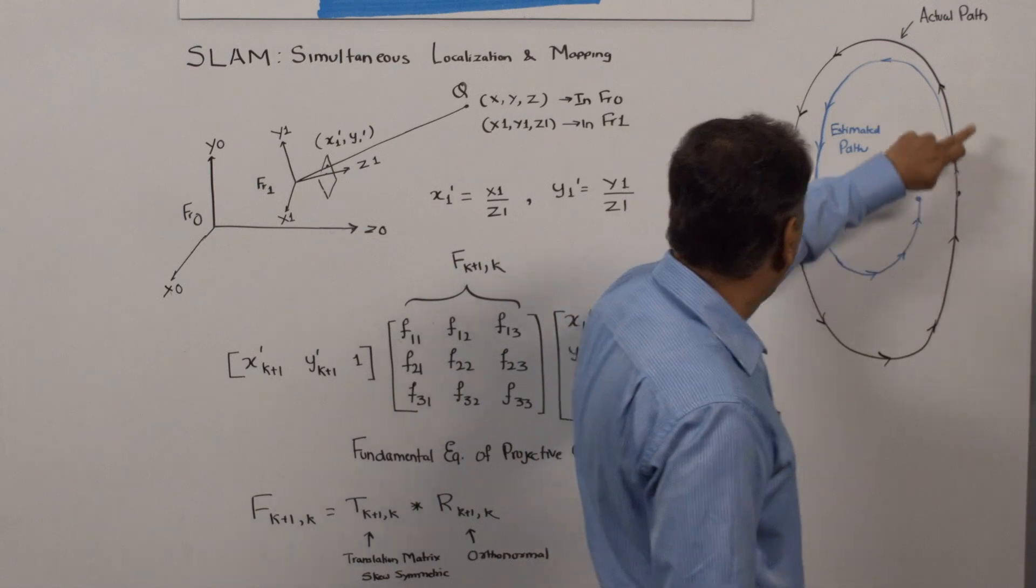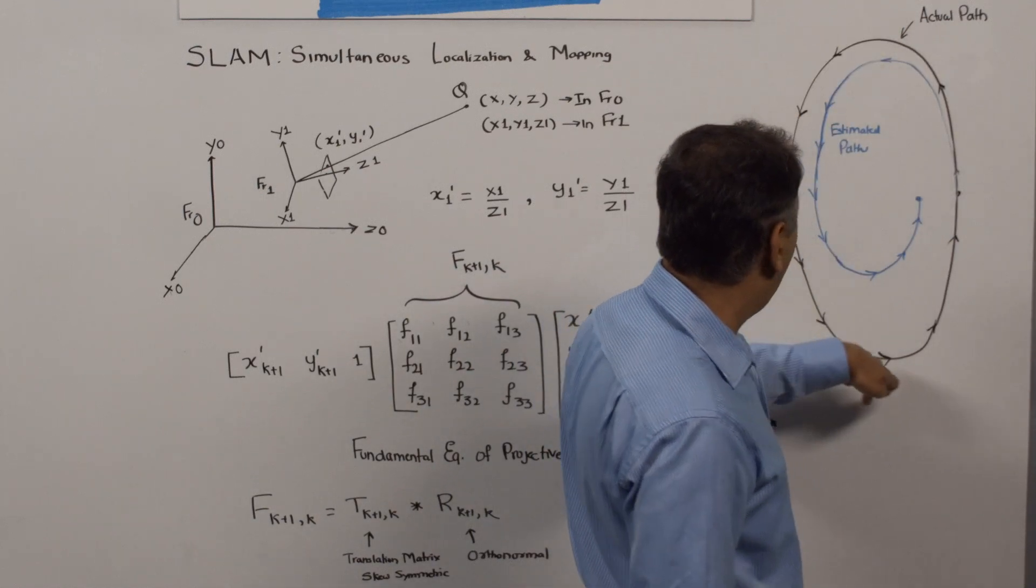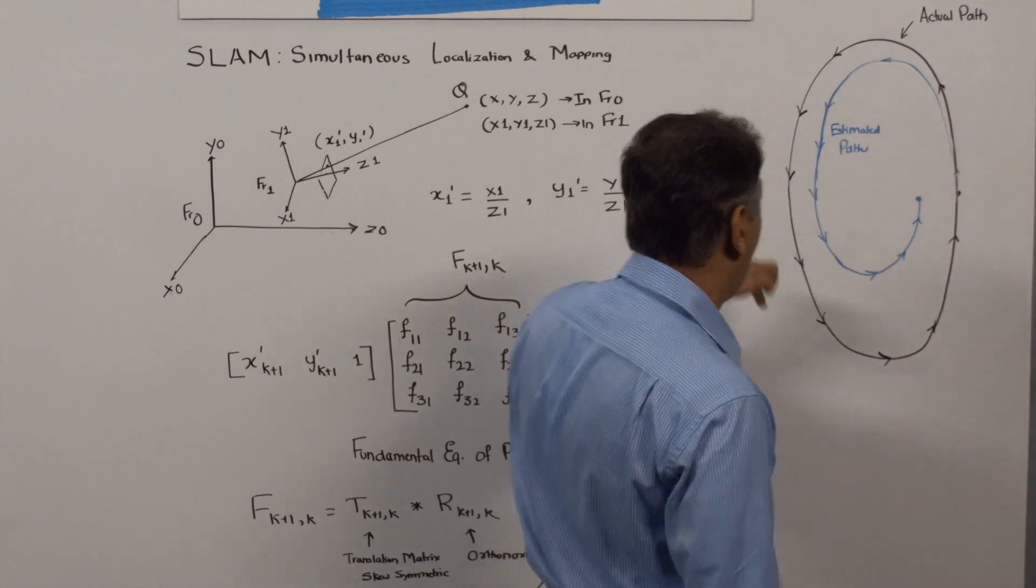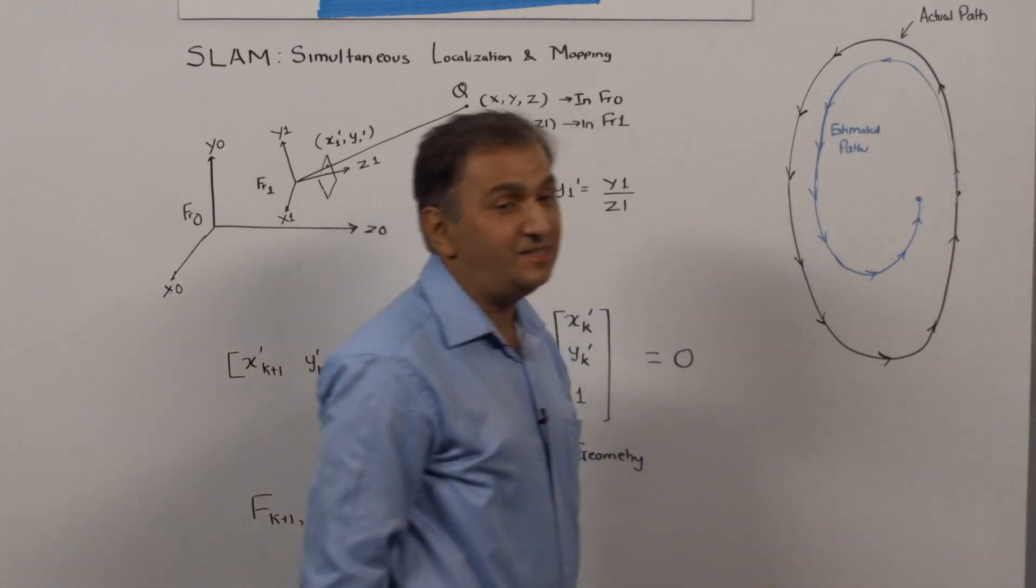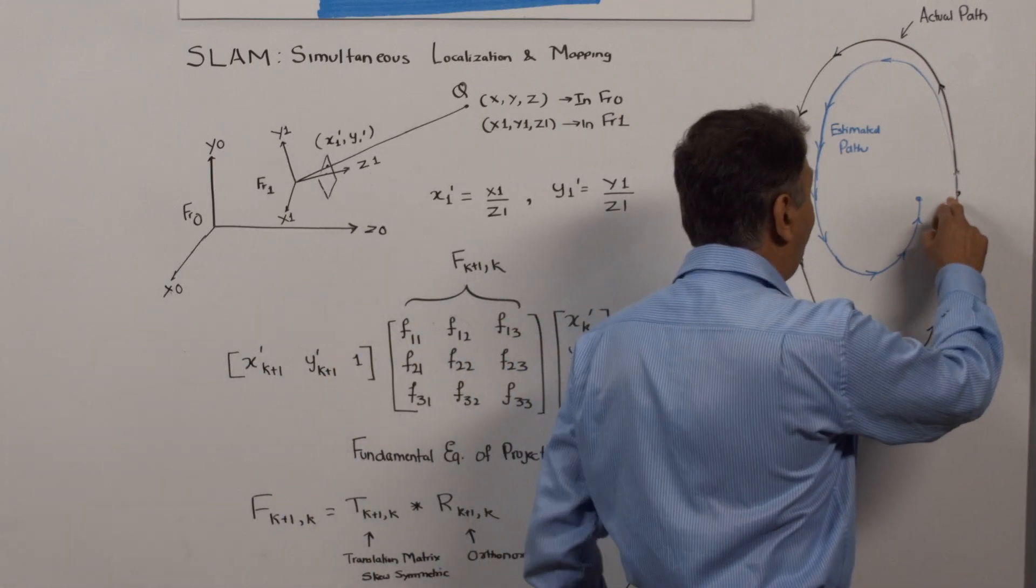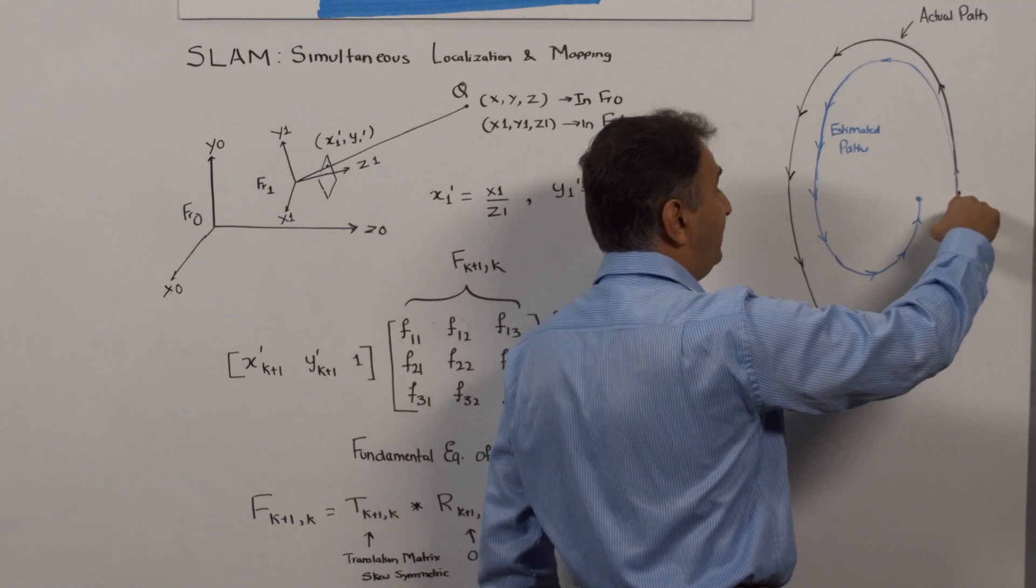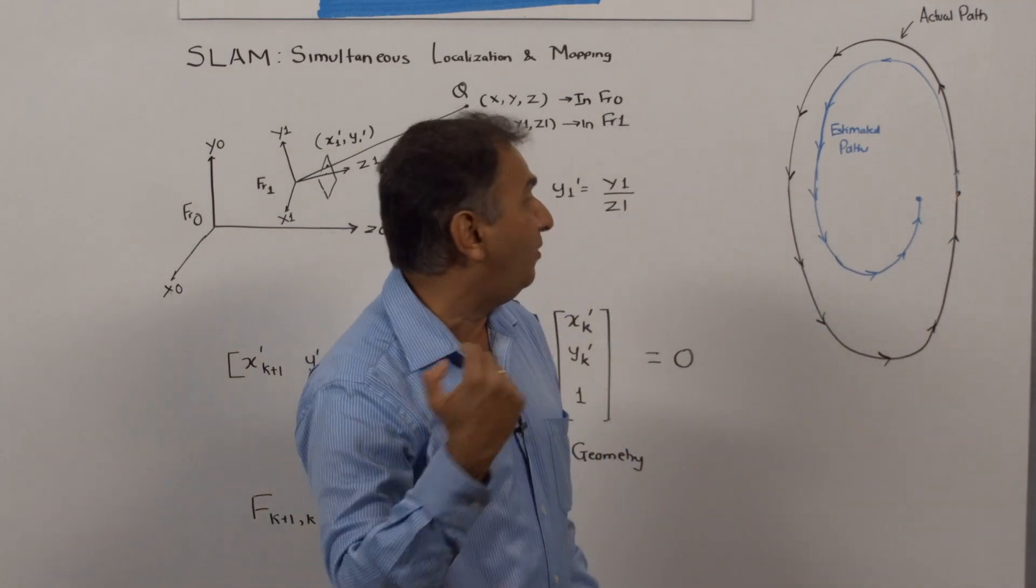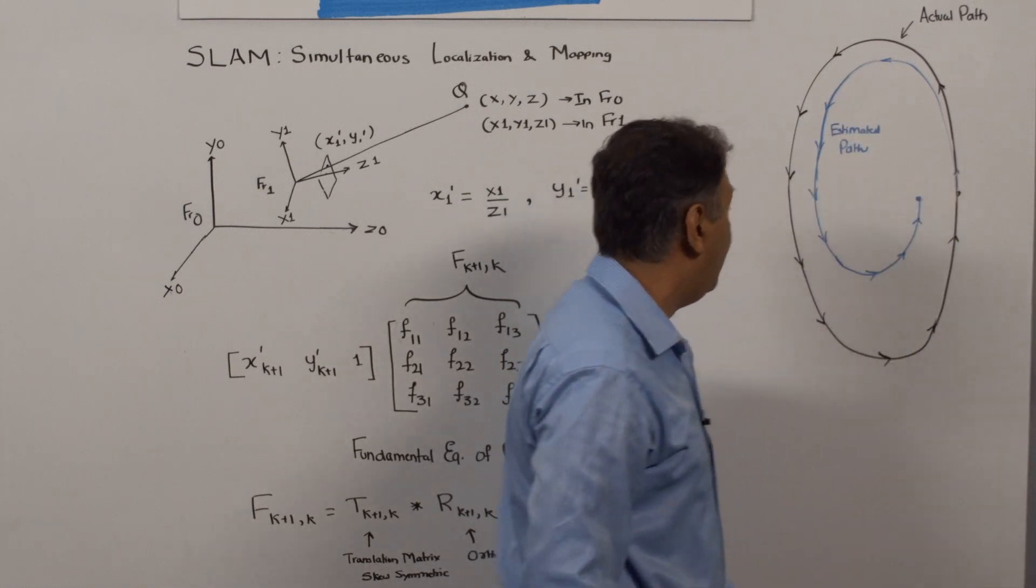For example, this black oval is the actual path of the camera, and this blue line is the estimated path of the camera. What we have at this point is the camera returns to the same point after traversing, after moving about in the room, and this is where we end up estimating where the camera has arrived.